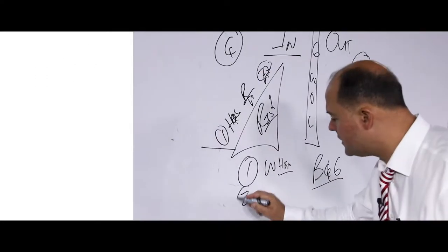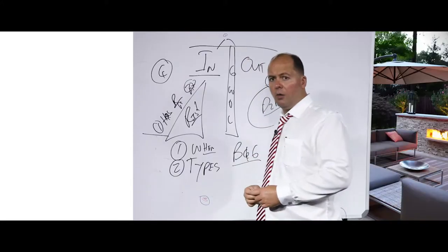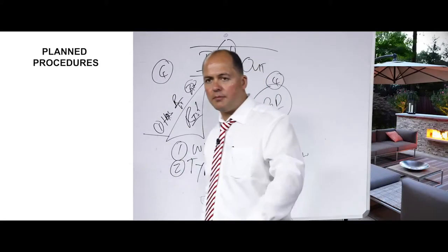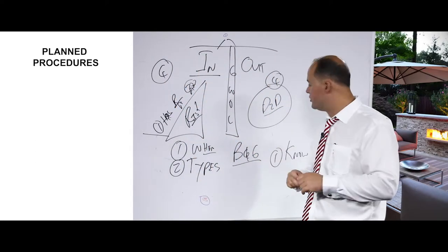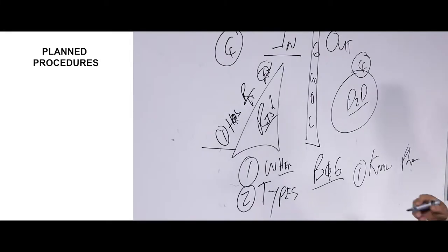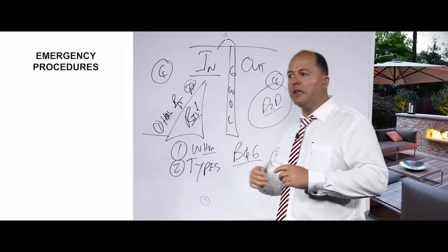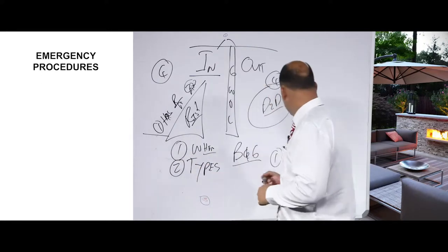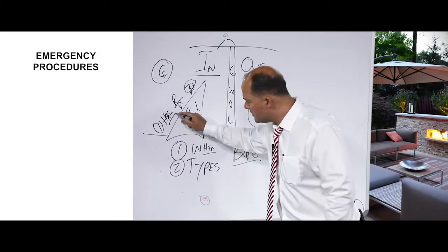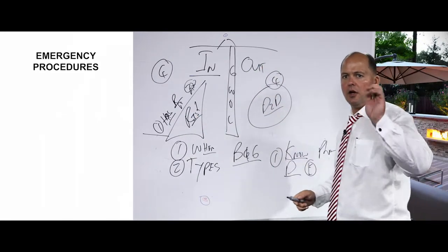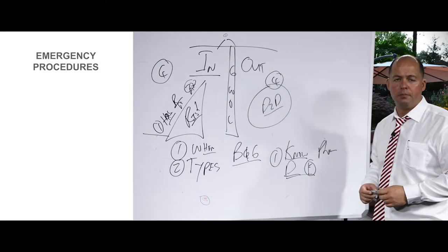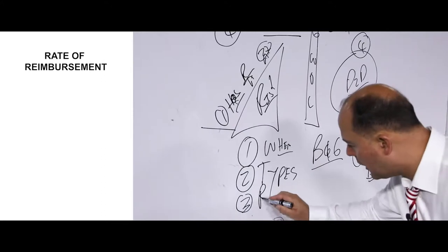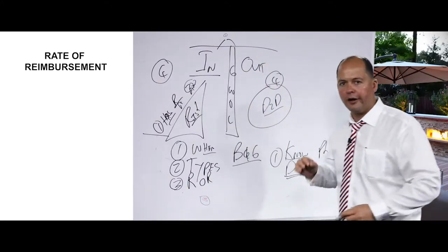There are two types of hospitalization. One: hospitalization for 'I know' procedures — I know I must go for joint replacement, a knee operation, or open-heart surgery. That's what we call planned procedures. Two: hospitalization for 'I didn't know' events — I didn't know my appendix would burst, I didn't know I'd be in a car accident, I didn't know I'd suffer a heart attack. That's what we call emergency. The third important thing is the rate of reimbursement — ROR.